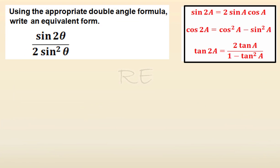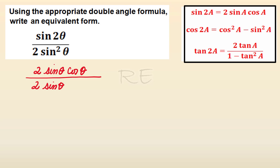We are going to use the appropriate double angle formula to transform sine 2θ divided by 2 sine squared θ. Sine 2θ, according to the formula, is 2 sine θ cosine θ, divided by 2 sine squared θ, where sine squared θ is sine θ times sine θ. Now, 2 over 2 is 1, and sine θ over sine θ is 1 — they cancel each other. We are left with cosine θ over sine θ, which is cotangent θ.